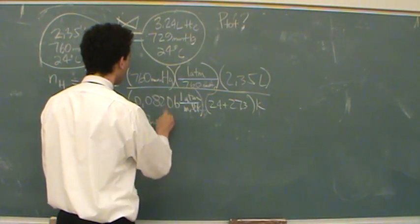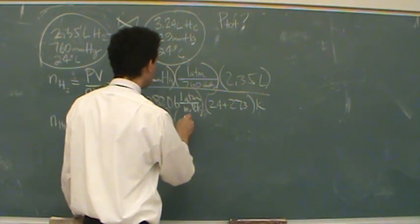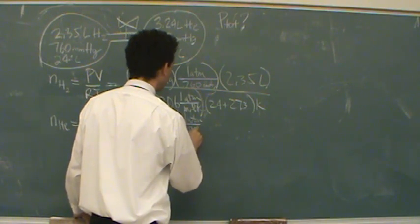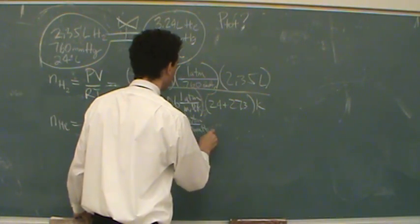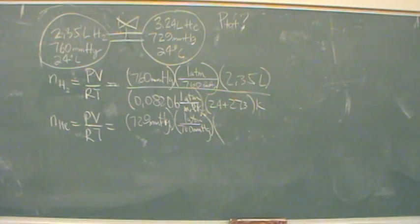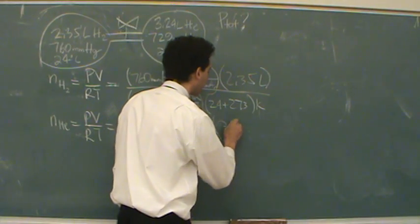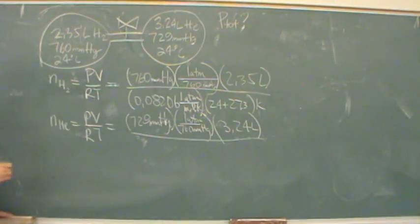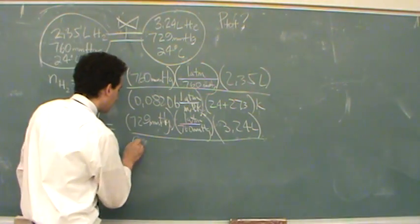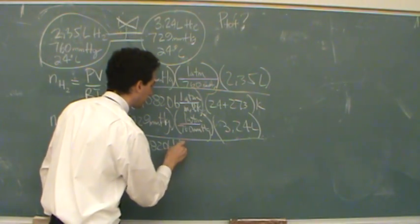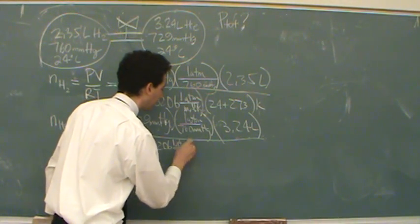729 millimeters of mercury. Again, it has to be in atmospheres, so 1 atm for every 760 millimeters of mercury. That's P. V is 3.24. That's PV. On the bottom, we'll have RT, the same R. 0.08206 liters atmospheres per mole Kelvin.